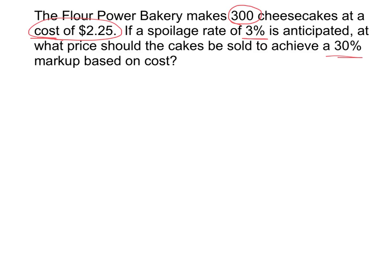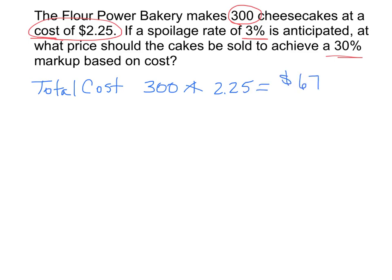The first thing we need to do is figure out what the total cost is. The total cost would be the number of cheesecakes times the price of one cheesecake, so that'll be $675.